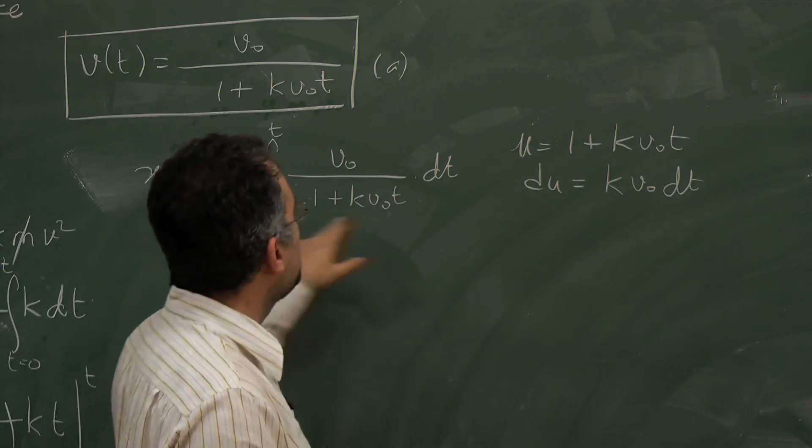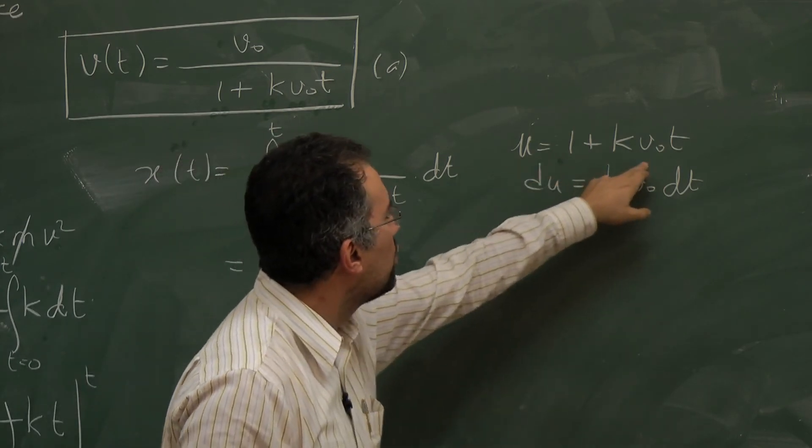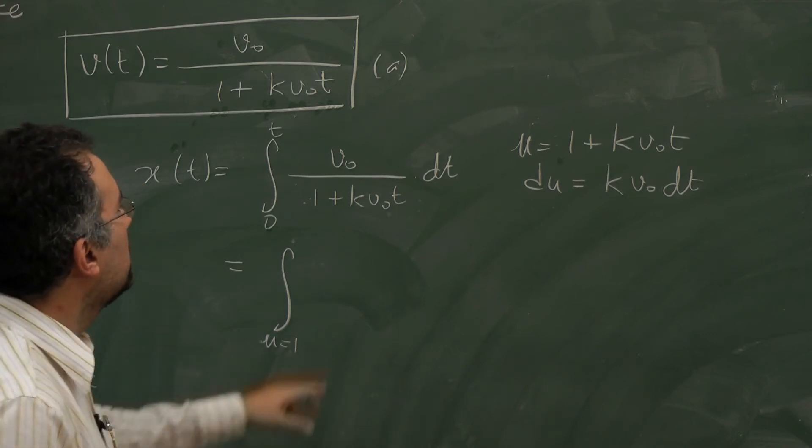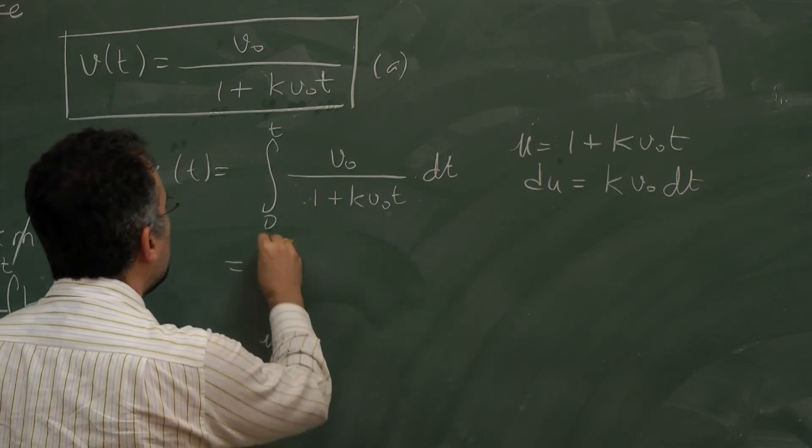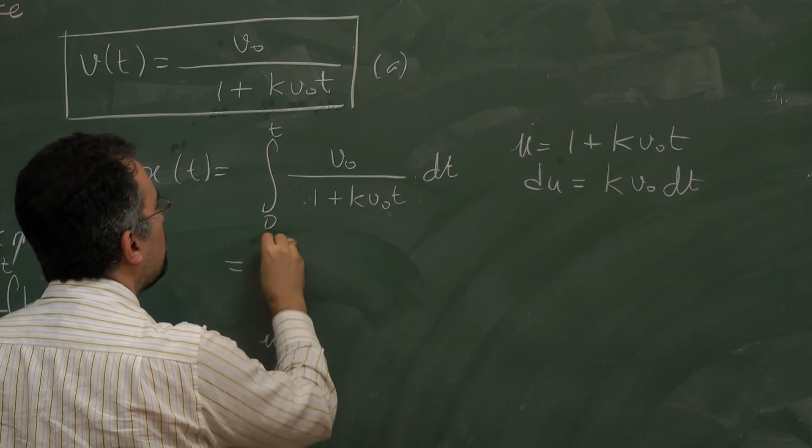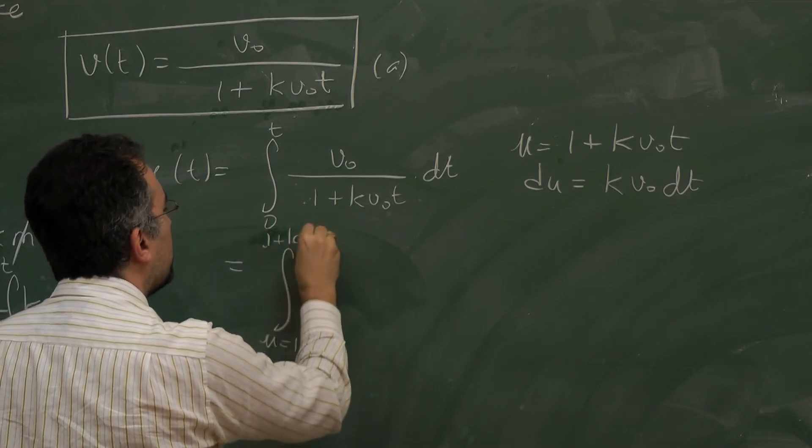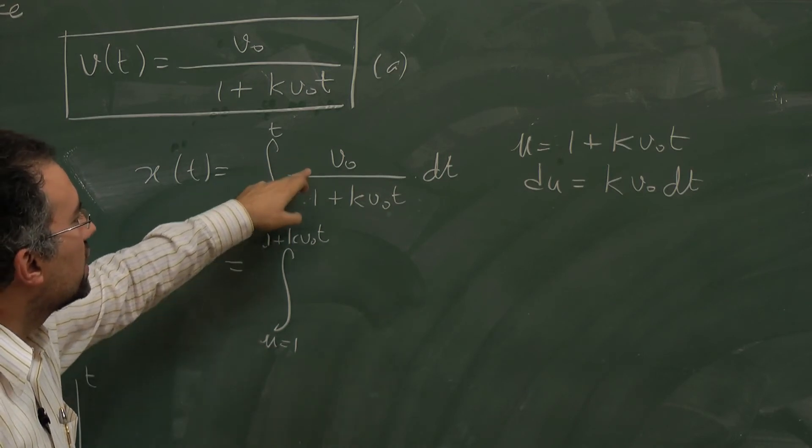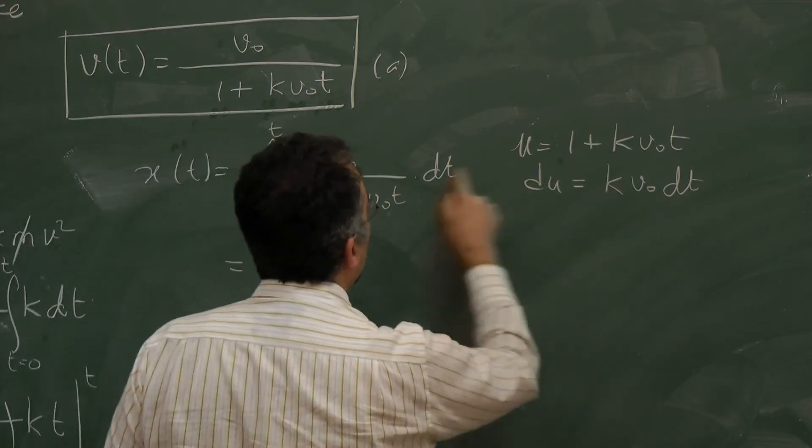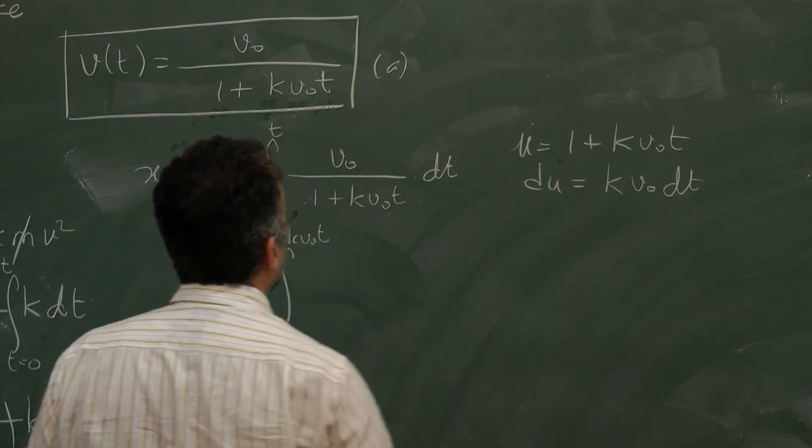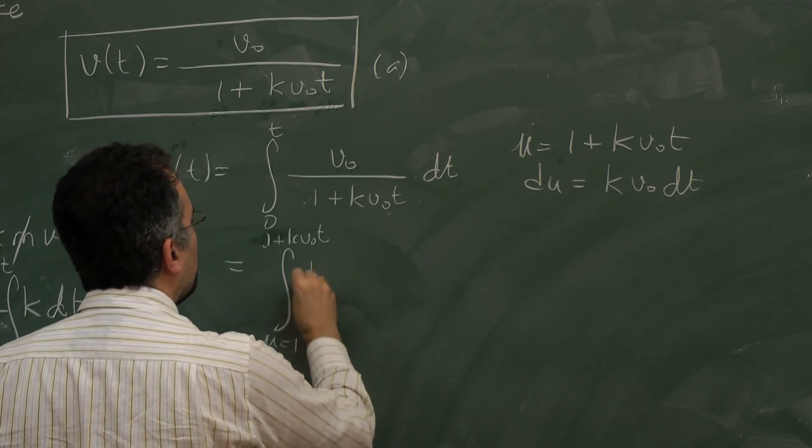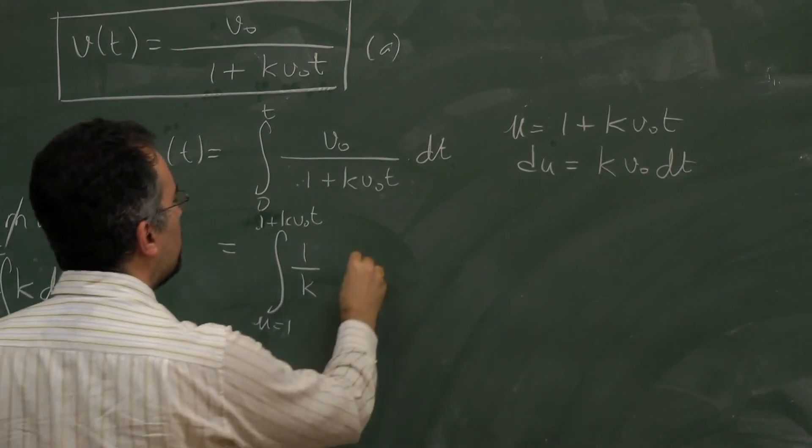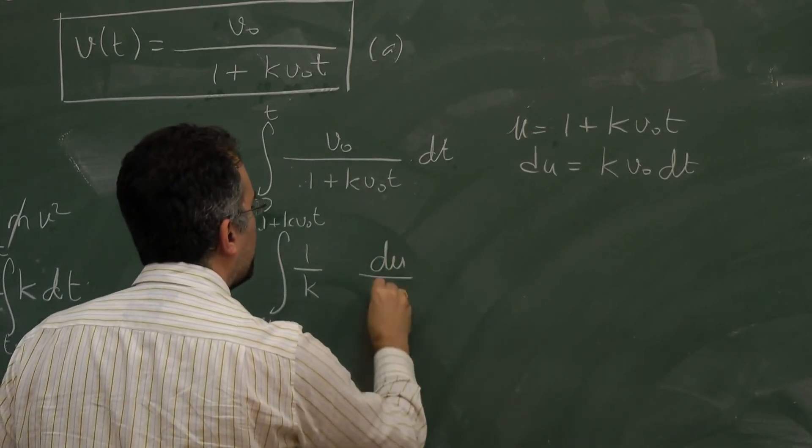Now with a total change of variables, I can even change the integration limits. At t equals 0, u is going to be 1. So from u equals 1 to 1 plus k v0 t. The integrand is going to be instead of v0 dt, I can put 1 over k du over u.